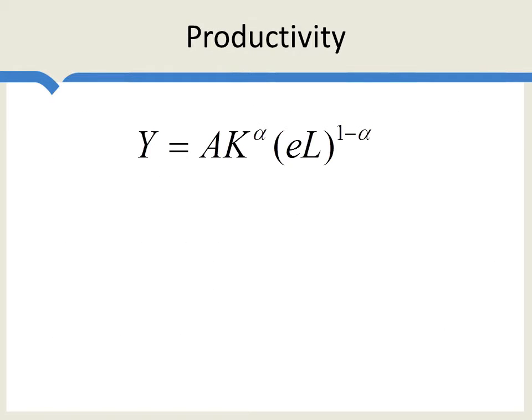To go beyond the strict SOLO model, we're going to want to start talking about productivity. A little bit of intellectual history is in order here. When SOLO wrote down his model, he was thinking about A as being ideas exogenous to the model which were available to anyone in the world. So he was thinking about A as representing Newton's laws, pasteurization, Maxwell's equations, the Pythagorean theorem, and so forth — ideas available to anyone.